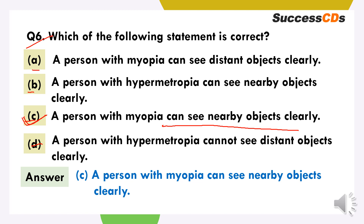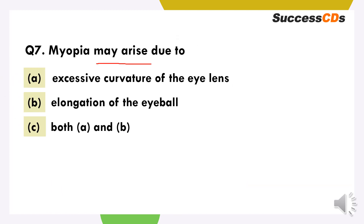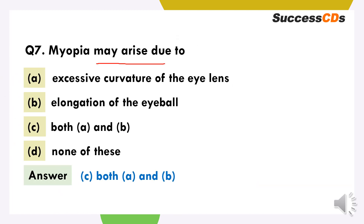Myopia may arise due to: option A, excessive curvature of the eye lens; option B, elongation of the eyeball; option C, both A and B are correct; or option D, none of these. The correct answer is C — it occurs due to both excessive curvature of the eye lens and elongation of the eyeball.